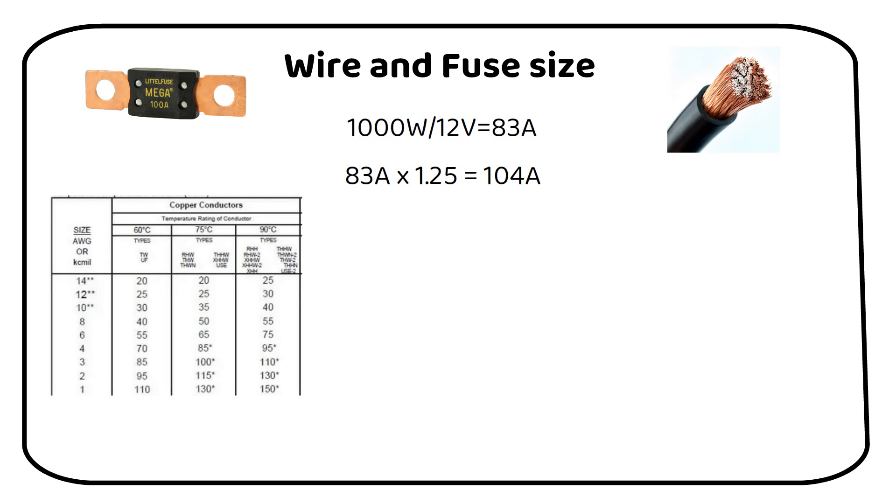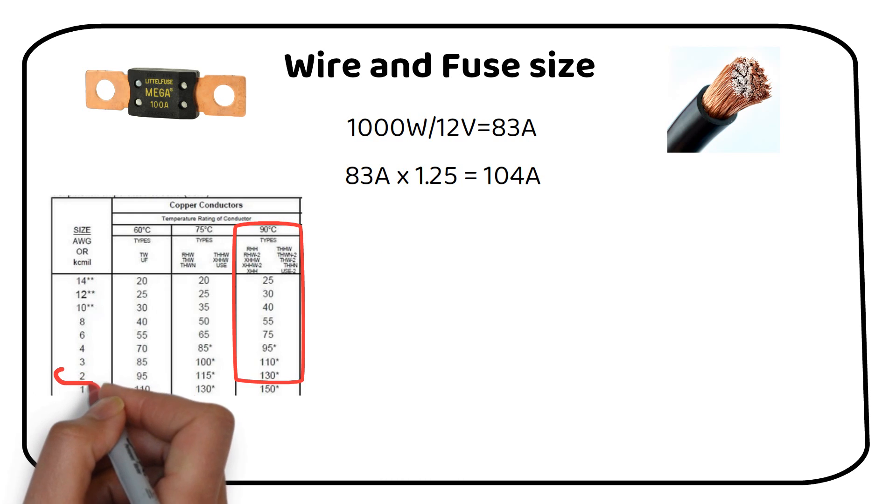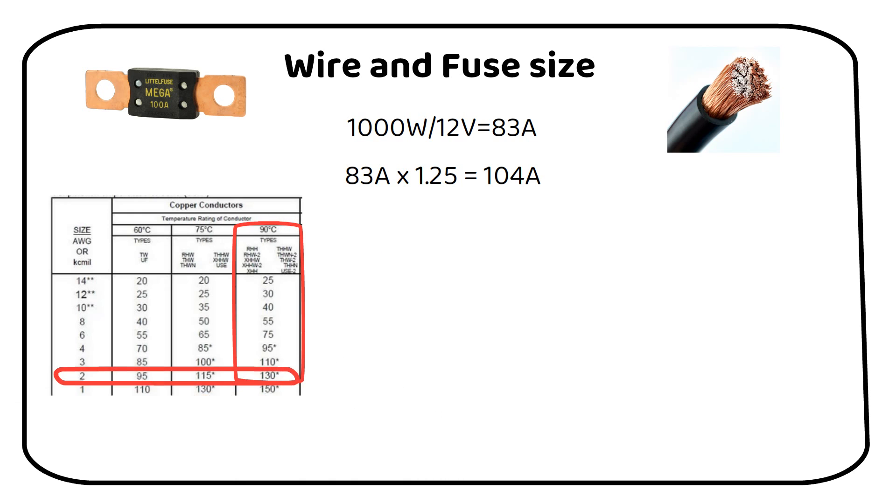We need to select a wire capable of handling this current. Since a 3 gauge wire isn't readily available, we will choose a 2 gauge or 35mm square wire with a 90 degrees Celsius insulation temperature rating.